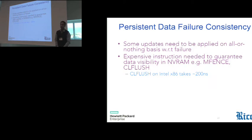So a few takeaways from this example is that for data stored in NVRAM, the persistent data, we may need to apply some of these updates in all or nothing basis with respect to failure. And in order to enforce this all or nothing behavior and to enforce certain ordering of memory updates, we may need to use expensive instructions such as memory fences and cache line flushes. So they are to be used sparingly.